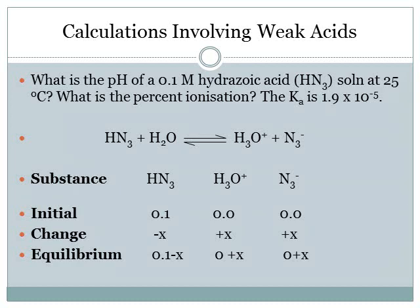Let's look at a typical exam calculation: what is the pH of a 0.1 M hydrozoic acid (HN₃) solution at 25°C, and what is the percent ionization? You're given Ka = 1.9 × 10⁻⁵. If you're not given the equation, knowing you have a Ka value tells you it's a weak acid. Split the acid down the middle: it forms H₃O⁺ and N₃⁻. I set up an ICE table — Initial, Change, and at Equilibrium — with the reactant (HN₃) and the two products, excluding water.